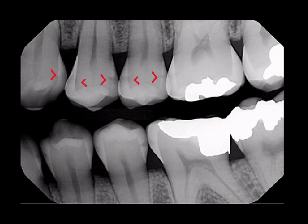We take a more anterior bite wing, which this is — we know because we've caught the canines on this. We then take another bite wing further back where the first molar is in the center of the film. The cone head is opened up a little more so we can try to get those interproximal areas on the mesial and distal of the first molar without horizontal overlap.